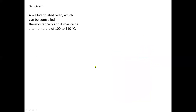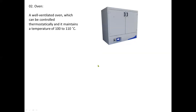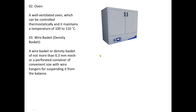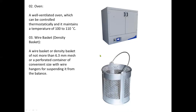The second apparatus is the oven — a well-ventilated oven which can be controlled thermostatically and maintains a temperature of 100 to 110 degrees Celsius. Third is the wire basket or density basket — a wire basket of not more than 6.3 millimeter mesh or a perforated container of convenient size with wire hangers for suspending it from the balance.